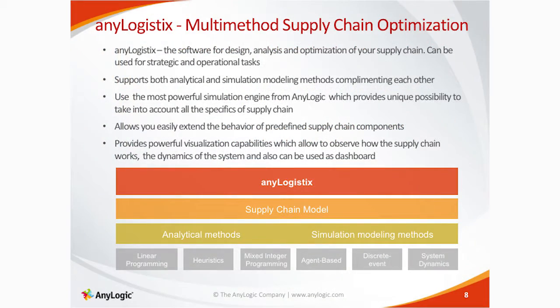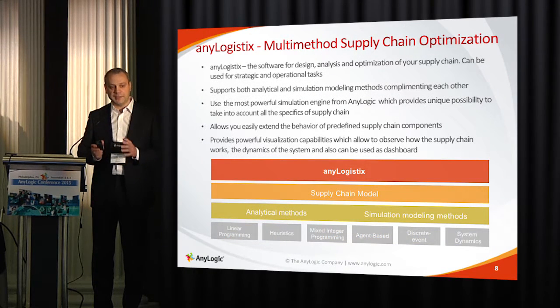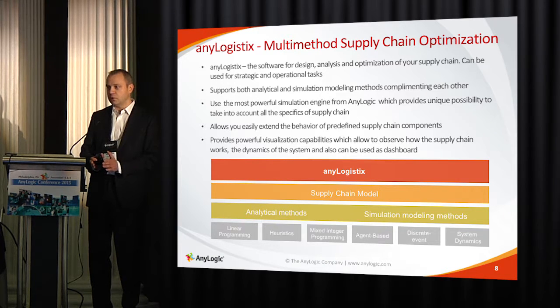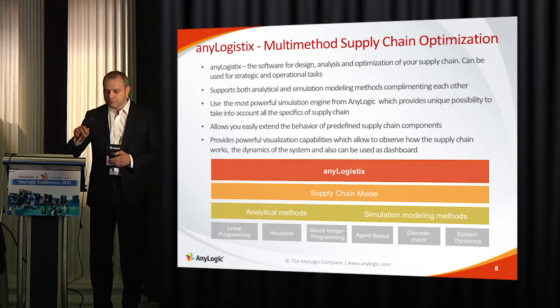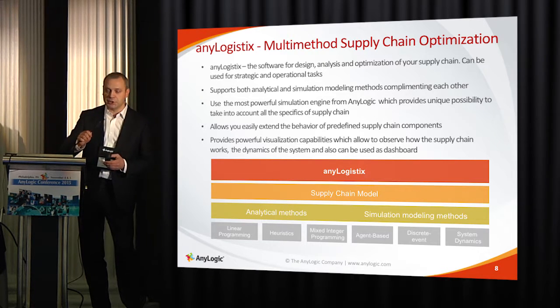So what is Any Logistics? Any Logistics is a software to design, optimize, and analyze your supply chain. It can be used on both strategic and operational levels, and it provides the possibility to customize the user interface to end customer needs. It supports both analytical and simulation modeling methods, which complement each other — simple analytics is used to get the first approximation for your simulation model, which can then be extended with Any Logistics as well as with AnyLogic. It also provides full visualization capabilities, so you can see how your system works, the dynamics of the system, and how it reacts to external events — creating trust in the supply chain model and the results.